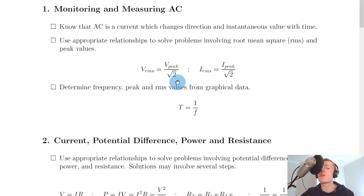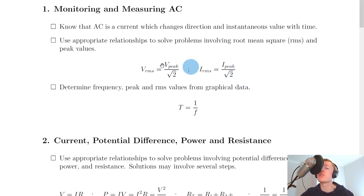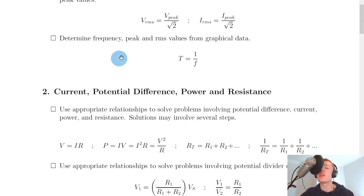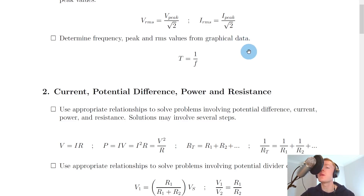We have the relationship between peak and RMS voltage and the relationship between peak and RMS current. So we have V_RMS equals V_P over root two, and I_RMS equals I_P over root two. Or you could remember these as V_P equals root two times V_RMS, and I_peak equals root two times I_RMS. Remember, the peak values should always be bigger than the RMS values. Lastly for section one, you need to determine frequency, peak and RMS values from graphical data. We're given T equals one over F, so you need to be able to look at oscilloscope traces and work out the peak voltage, the period, and then the frequency of the signal.